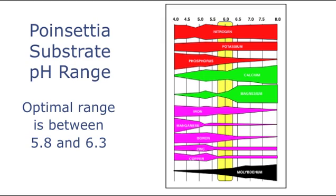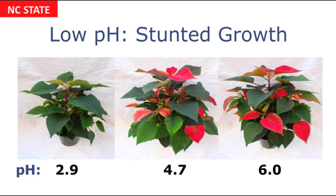So what does occur if the substrate pH becomes too low or too high? In an experiment conducted at NC State University, we grew Viking poinsettias at three different substrate pH levels. At pH 2.9, the plants on the left are smaller and the color development is delayed. In contrast, plants grown at pH 4.7 and 6.0 were similar in size and had normal plant growth.